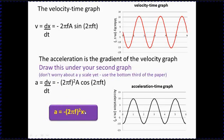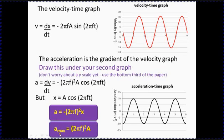Using the mathematical approach: acceleration is the differential of velocity with respect to time. Differentiating minus sine gives minus cosine, and taking out the 2πf again gives -(2πf)² A cos(2πft). Now, A cos(2πft) is just x, so this becomes a = -(2πf)² x. This is where we started from — the acceleration is proportional to the displacement and in the opposite direction, which is the definition of SHM. The constant of proportionality is (2πf)². The maximum acceleration a_max = (2πf)² A, which occurs at the ends of the oscillation where displacement is maximum and the object is momentarily stopped.